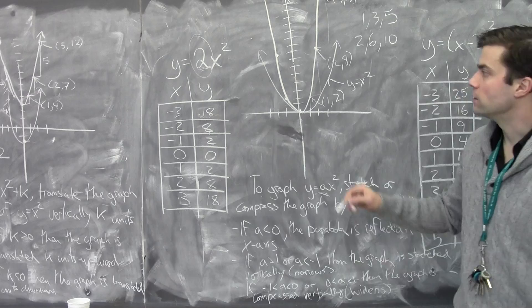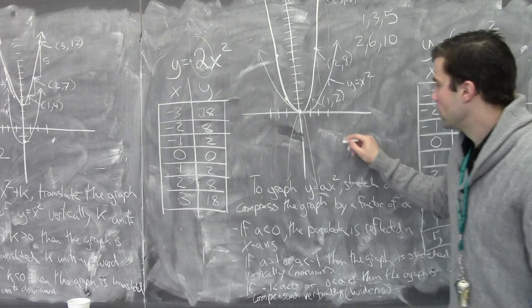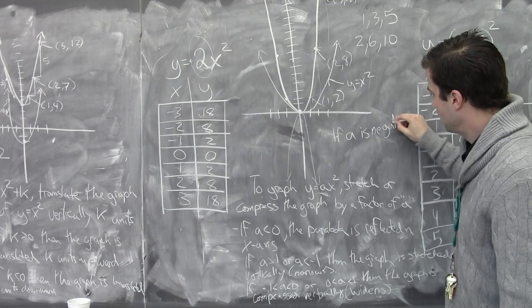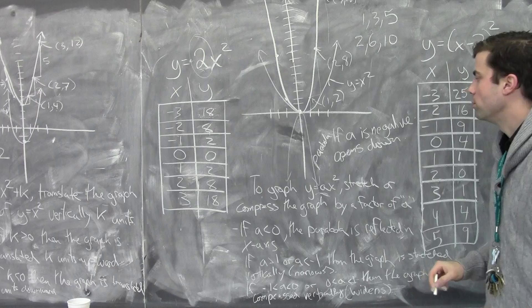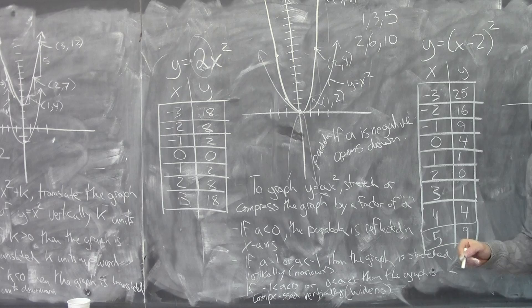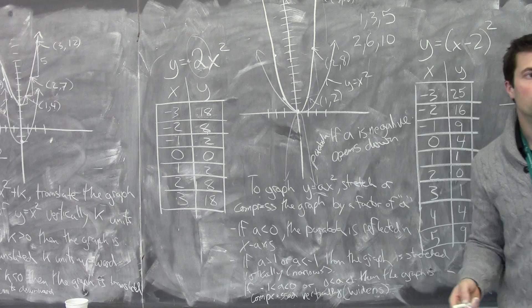Likewise, when we have a negative A value with magnitude greater than 1, we also get a stretch, but this time the parabola opens down. If A is negative, it opens down; if A is positive, it opens up. That makes sense because a negative sign just makes all the y values negative, so the parabola flips downward.